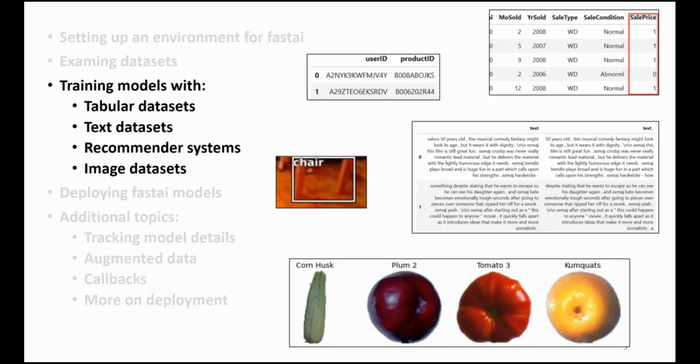Next, you will use transfer learning to train Fast AI language models, that is, models that predict the subsequent words given a set of words, and text classifiers, that is, models that predict the category to which a piece of text belongs.